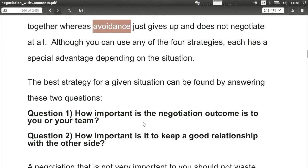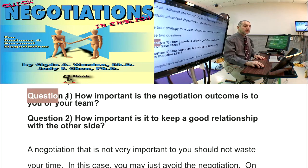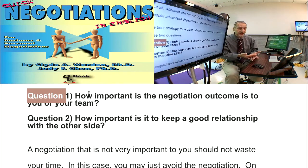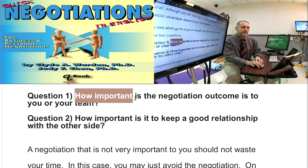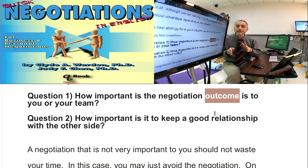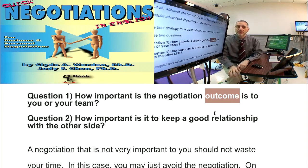The great thing here is it's actually not hard to figure out which strategy to use. You just have two questions to ask. If you ask these two questions and answer them honestly with your team — looking at your company's position — you'll have your strategy. There are four possible answers corresponding to the four strategies. Let's look at question number one: how important is the negotiation outcome to your team?